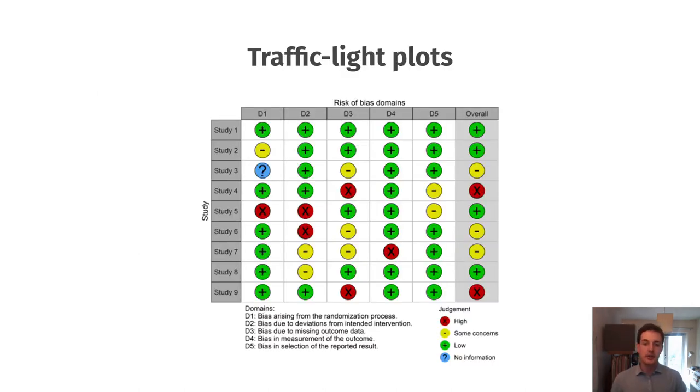This is an example of a traffic light plot using the risk of bias 2 tool for randomized control trials. You have your studies presented down the left hand side along with your domains of bias, so bias due to randomization and intended intervention or deviations along the top, and then an overall risk of bias judgment on the right hand side. Acceptable levels of risk of bias here are high, some concerns and low, though that will vary from tool to tool.